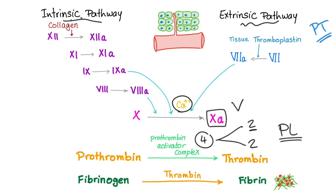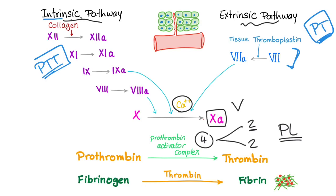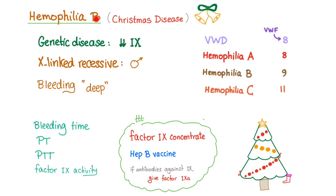How to measure them? We need PT — prothrombin time — for the extrinsic pathway, and PTT for the intrinsic pathway. The extrinsic pathway is short, so PT is shorter than PTT. And hemophilia B is Christmas disease.